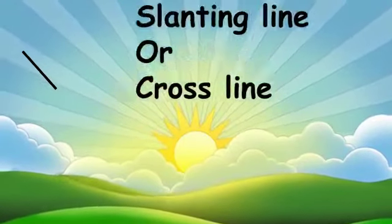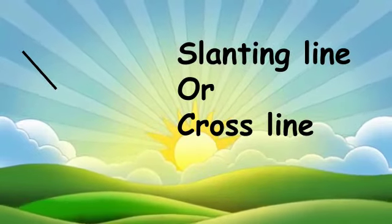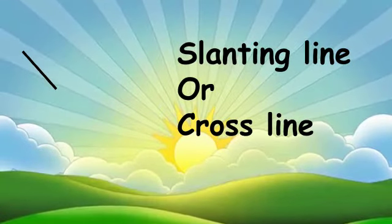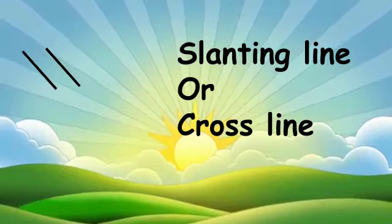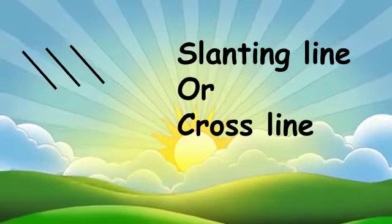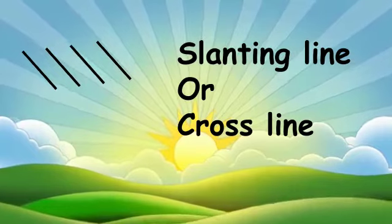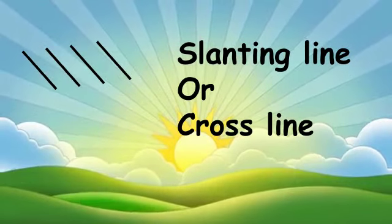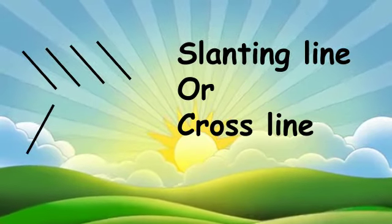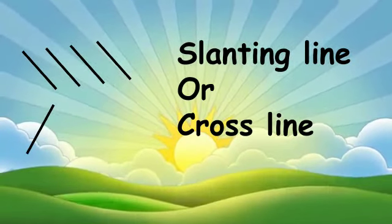Students, now let's draw a slanting line or a cross line. This is known as a slanting line or a cross line. And it can also go the other way — this line is also known as a slanting line or a cross line.